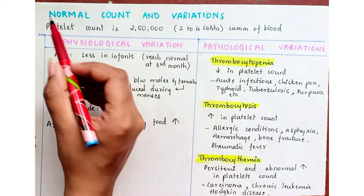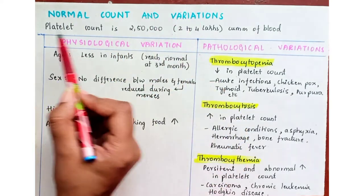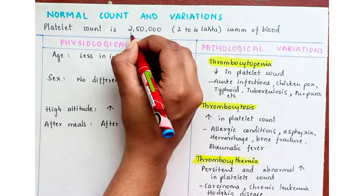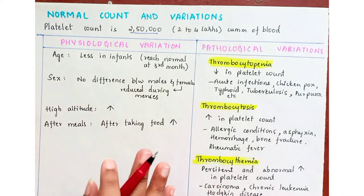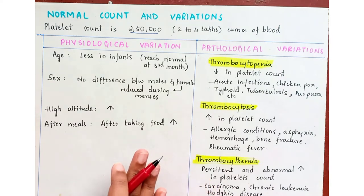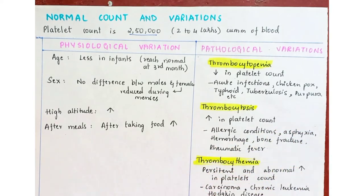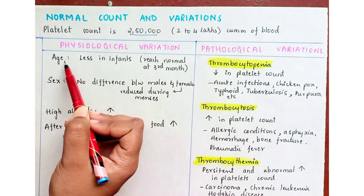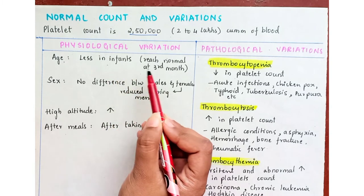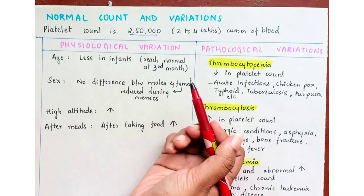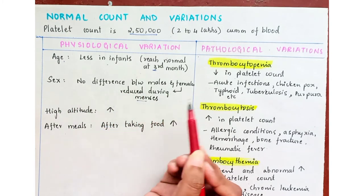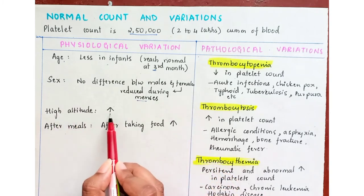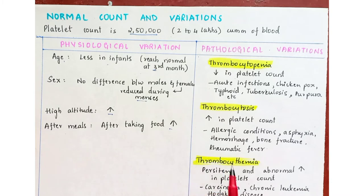The normal platelet count is 250,000 per cubic mm of blood, ranging from 2 to 4 lakhs. Physiological variations include: in infants the count is less and reaches normal by the third month; male and female have equal numbers except during menses when female platelets decrease; at high altitudes and after meals, platelet count increases.